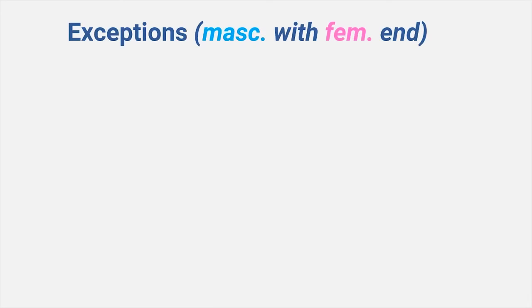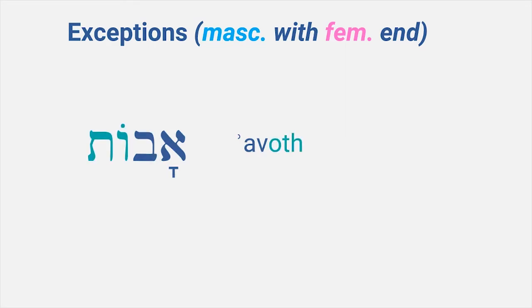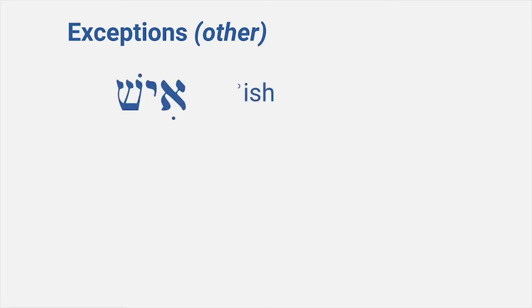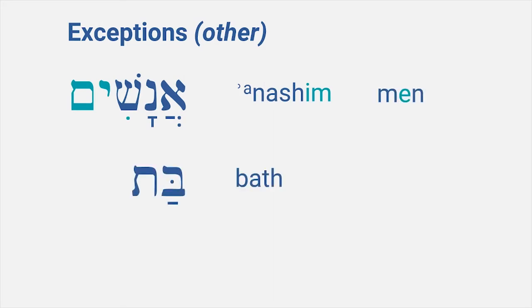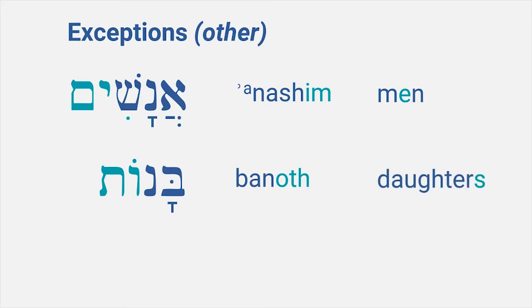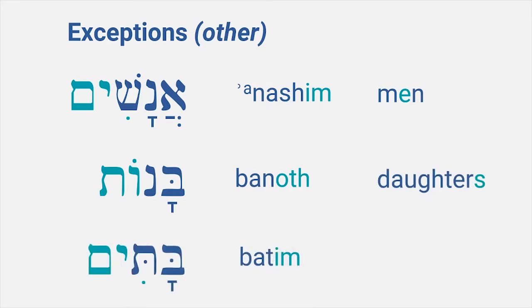And what about the other way around? There is one famous example where av, father, becomes avoth, fathers or ancestors — a masculine word taking a feminine ending. Then there are some words that take the normal expected ending but change their form somewhat. For example, ish, man, becomes anashim, men. Bat becomes banoth, daughters. And bayit, house, becomes batim, houses or households. There are more exceptions, but these are among the most common ones, and you'll have to learn most of them as you go along.